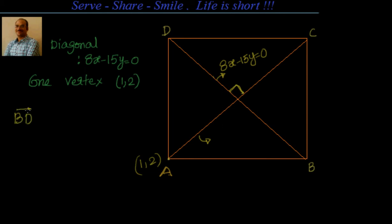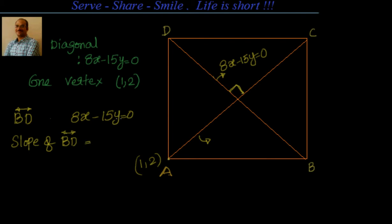We know BD equation is 8x minus 15y equal to 0. The slope of BD is 8 by 15. Since the diagonals of a square are at right angles to each other, the slope of AC will be the negative reciprocal, which is minus 15 by 8.